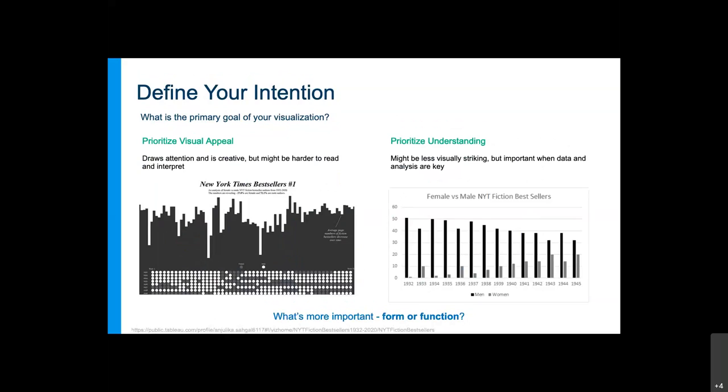Another design choice you might want to think about is what do you care more about: form or function in your graph? These two graphs are showing largely the same data about gender differences in authorship. The one on the left is stunning, a really lovely design. At a glance you get a good sense by looking at the color of the dots. The one on the right would be more appropriate if you're wanting your audience to understand more details or see specific trends.